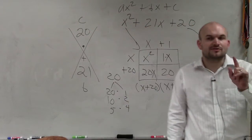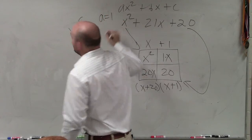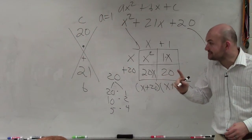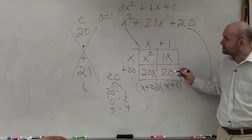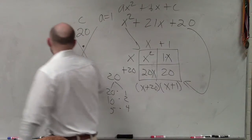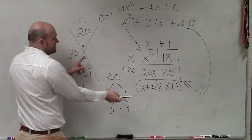All right, the other thing I want you guys to notice is notice a is equal to 1. When a equals 1, what you guys see here, what I want you guys to understand is the numbers that I found, 20 and 1, look. They show up in the factors, right?